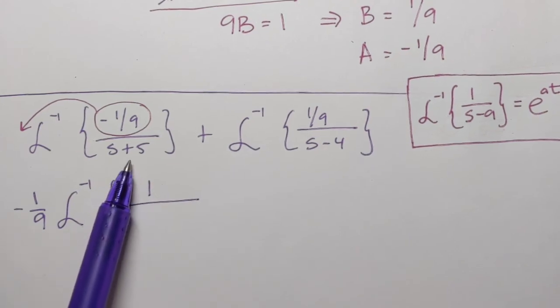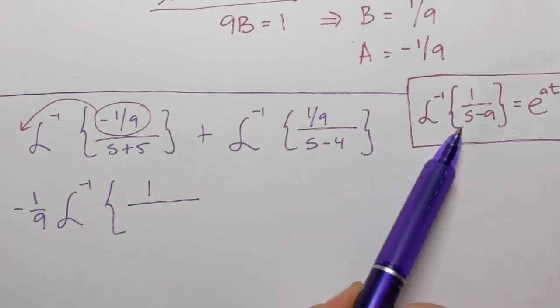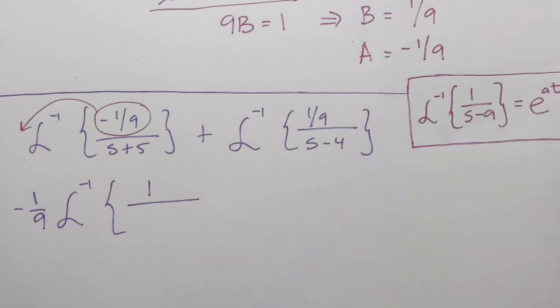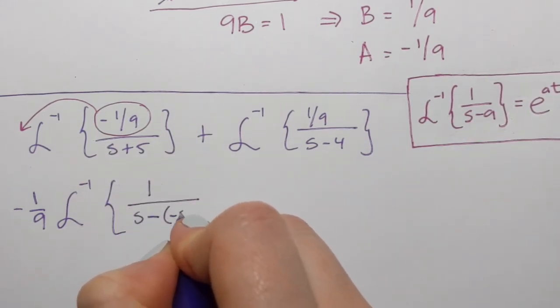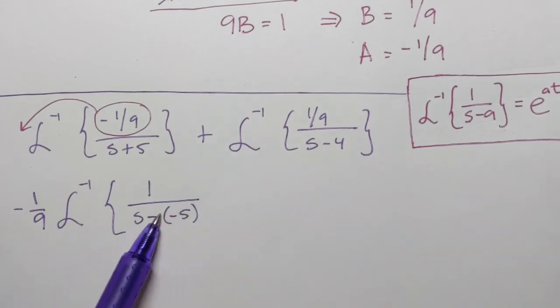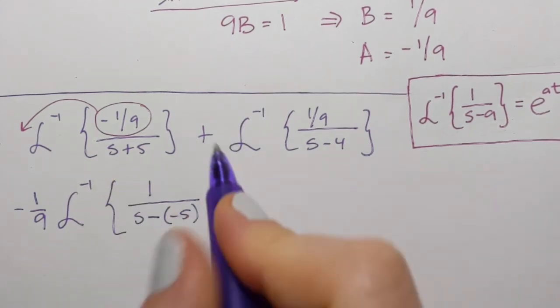Now, in the denominator, I have s plus 5. I need to have s minus a number. Well, that I can fix by writing s minus negative 5. But if I simplify, I'll go back to the original denominator.